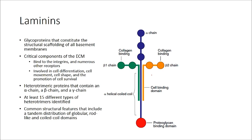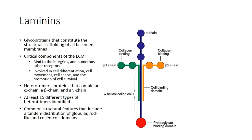Laminins are glycoproteins constituting the structural scaffolding for all basement membranes, existing along with collagen type IV. Laminin is a critical ECM component involved in cell differentiation, cell movement, shape of the cell, and promotion of cell survival. It is a heterotrimeric protein containing an alpha chain, beta chain, and gamma chain. There are at least 15 different types of heterotrimers identified, with common structural features including tandem distributions of globular, rod-like, and coiled domains.